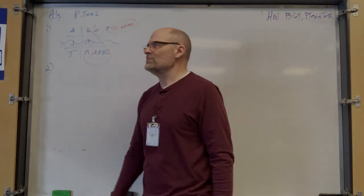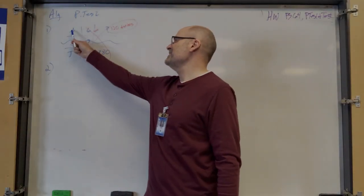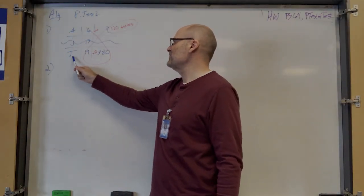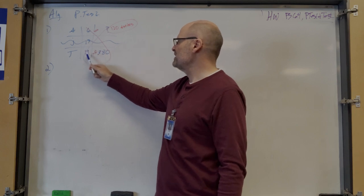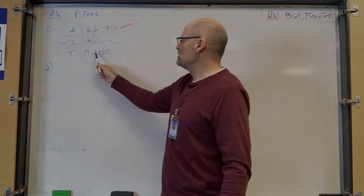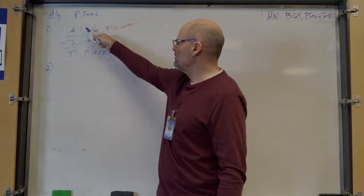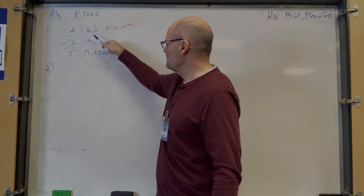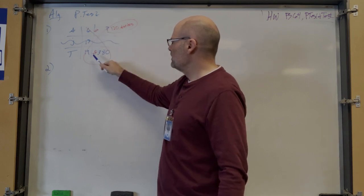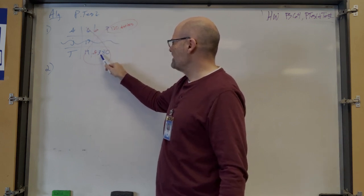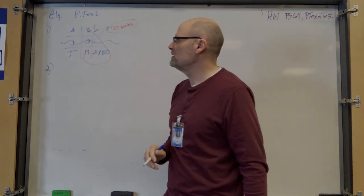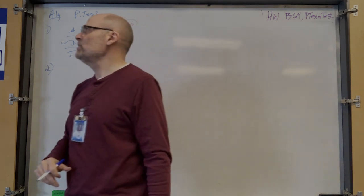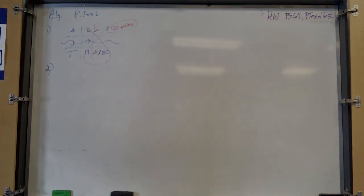Ratio tic-tac-toe: seniors to juniors. Don't forget the total — 6 to 13, so I had it up as 19. 380 goes with the total, so you can fish that out to find the seniors. Or you can say 19 times 20 is 380, so 6 times 20 is 120.